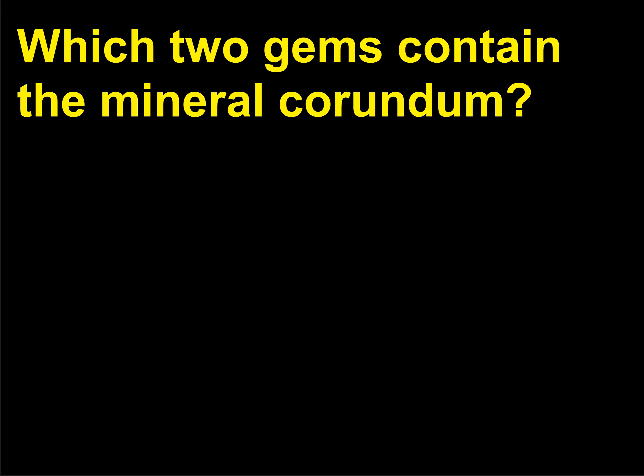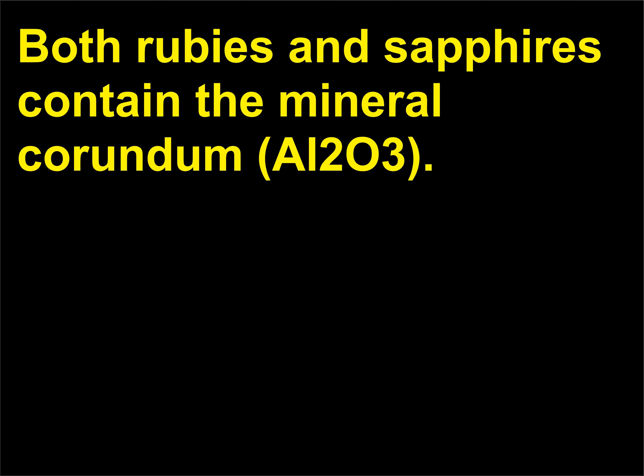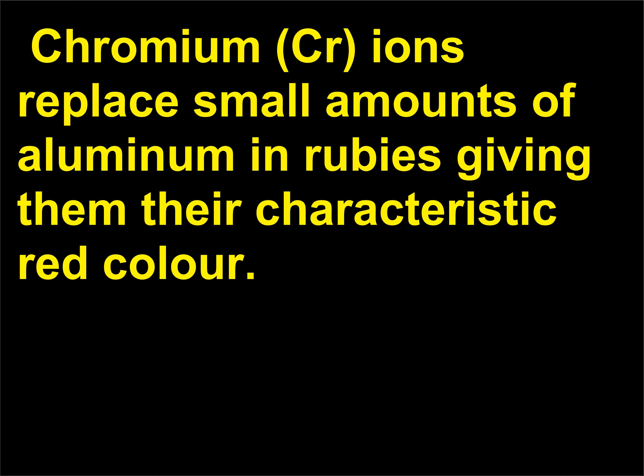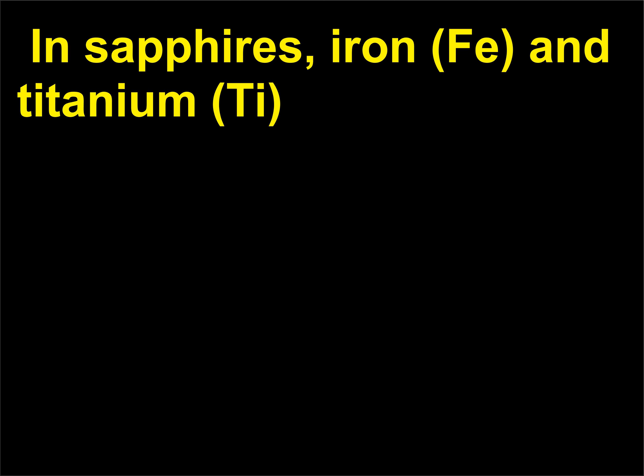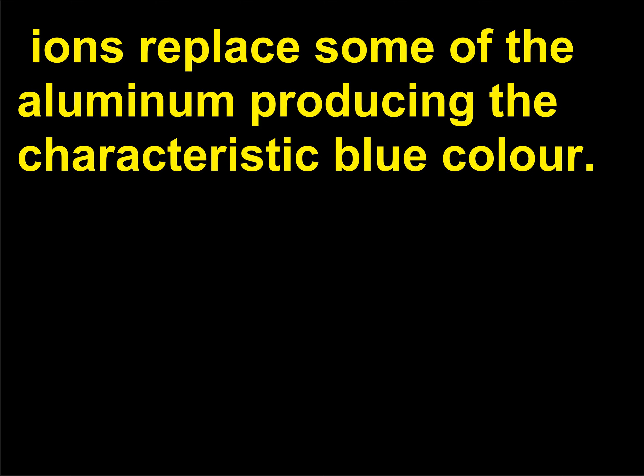Which two gems contain the mineral corundum? Both rubies and sapphires contain the mineral corundum (Al2O3). Chromium (Cr) ions replace small amounts of aluminum in rubies, giving them their characteristic red color. In sapphires, iron (Fe) and titanium (Ti) ions replace some of the aluminum, producing the characteristic blue color.